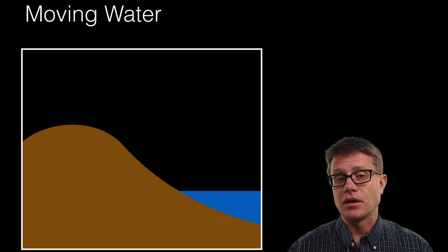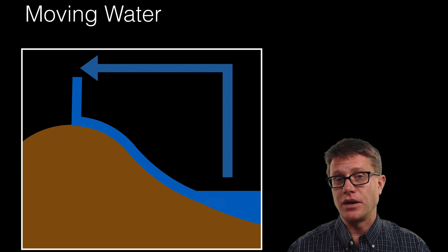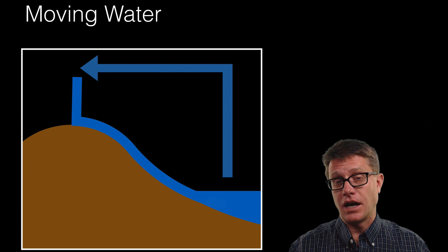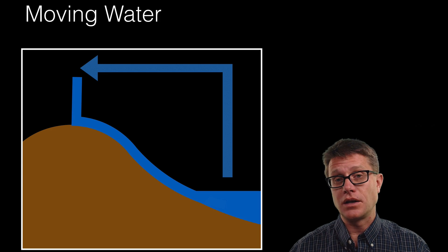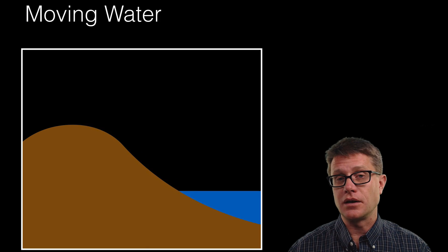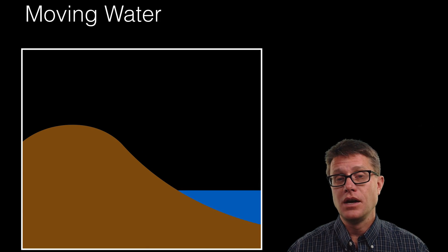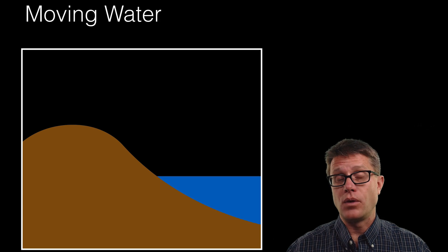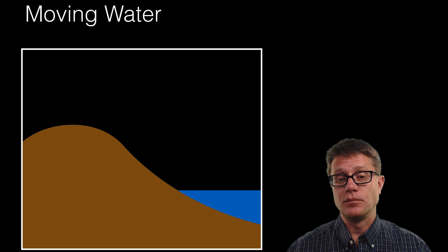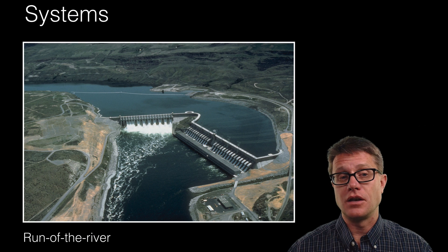If you are familiar with the water cycle you really know what is going on — we have evaporation, condensation, precipitation, and runoff. As the water is running off, we are capturing the energy of the flowing water. We could also have tidal systems: as the moon pulls on the water on our planet and moves it back and forth, we can generate a little bit of energy there as well.